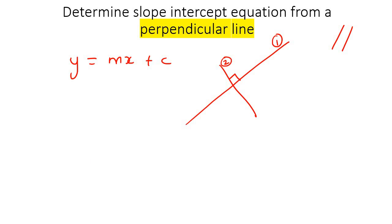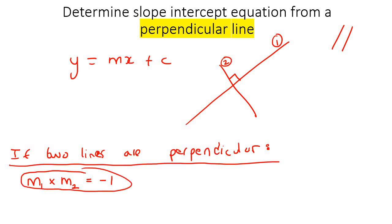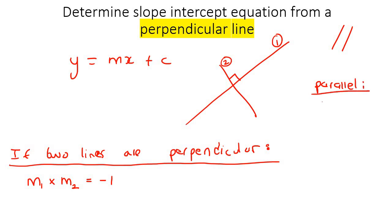There is a mathematical rule you can remember: if two lines are perpendicular, then M1 — the slope of the first line — multiplied by M2, the slope of the second line, should always equal minus one. This is a formula you can use when two lines are perpendicular. For parallel lines, their gradients are equal to each other; for perpendicular lines, you use this formula.